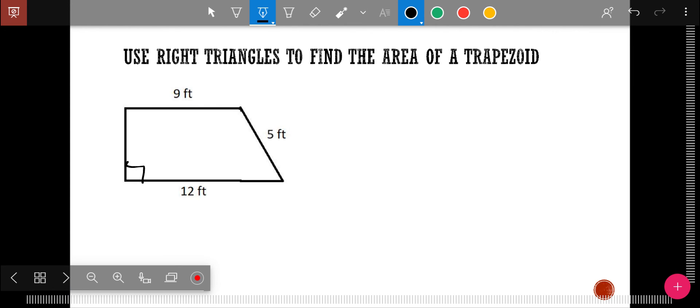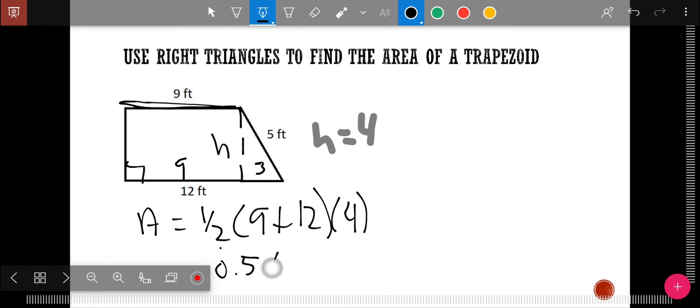Again, this is a right trapezoid. And so to find the height here, I have to use the right triangle rules. If this top part right here is nine, then the first part of this is nine and the second part is three. Why nine and three? Because nine plus three makes 12. And so this is still a three, four, five triangle, so H equals four. And so then I do the area formula. Area equals one half base one plus base two times the height, which is, I want to make it 0.5 times 21 times four, which equals 42 feet squared.